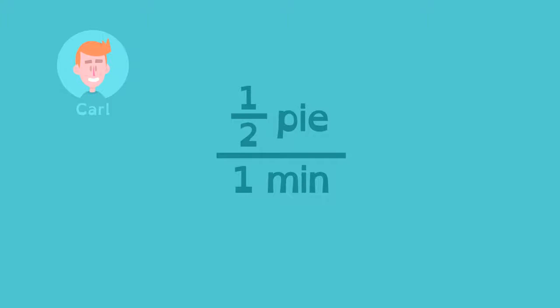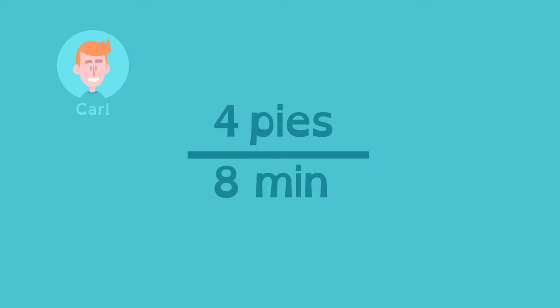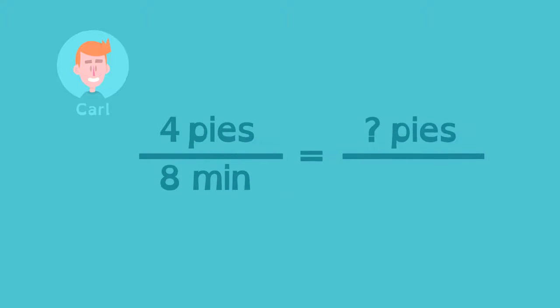Ratios and proportions show us the math behind unit rate. If Carl eats four pies in eight minutes, how many pies would he eat in one minute? In other words, what is his unit rate?